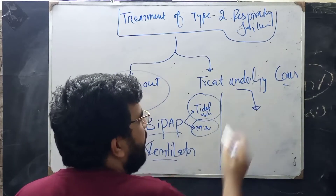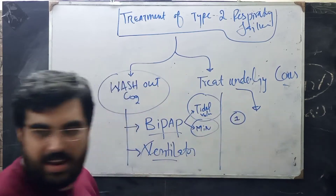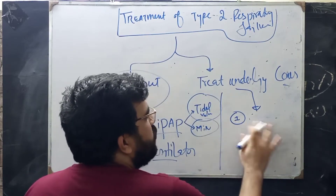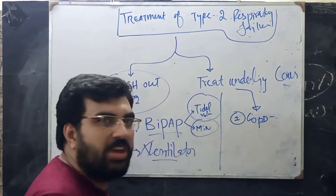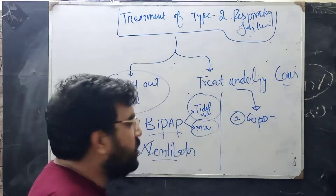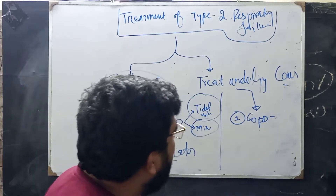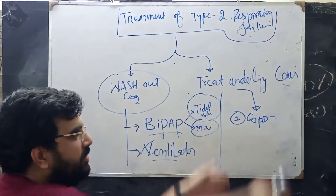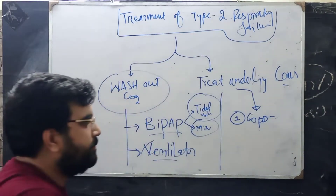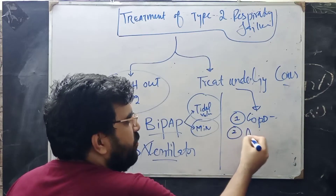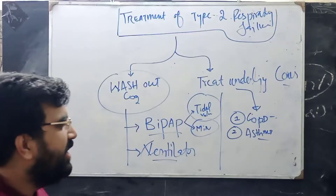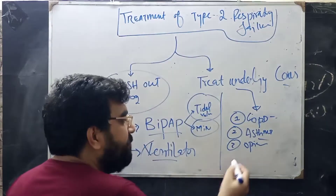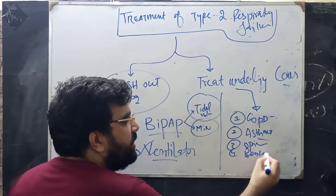The second part is treating the underlying cause. If it is COPD, you treat that COPD — give bronchodilators, steroids, IV antibiotics, and aminophylline, while simultaneously washing out the CO2. If it is acute exacerbation of asthma, treat that. If it is opiate toxicity, treat that — give naloxone and so forth. If it is benzodiazepine poisoning, treat that.